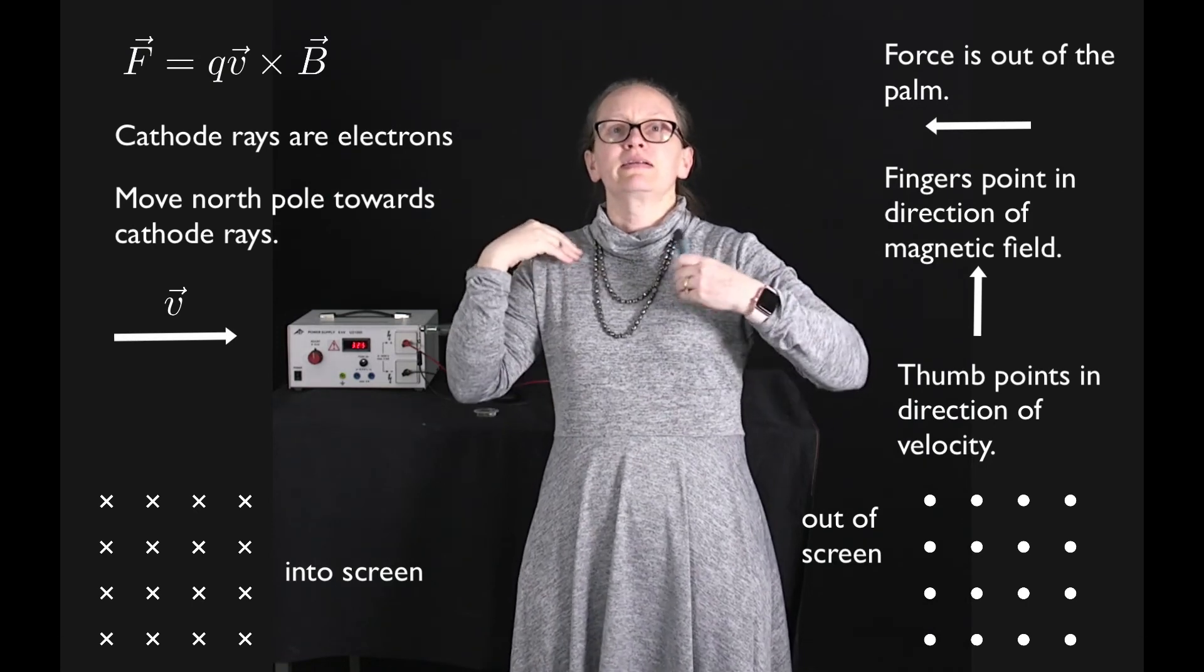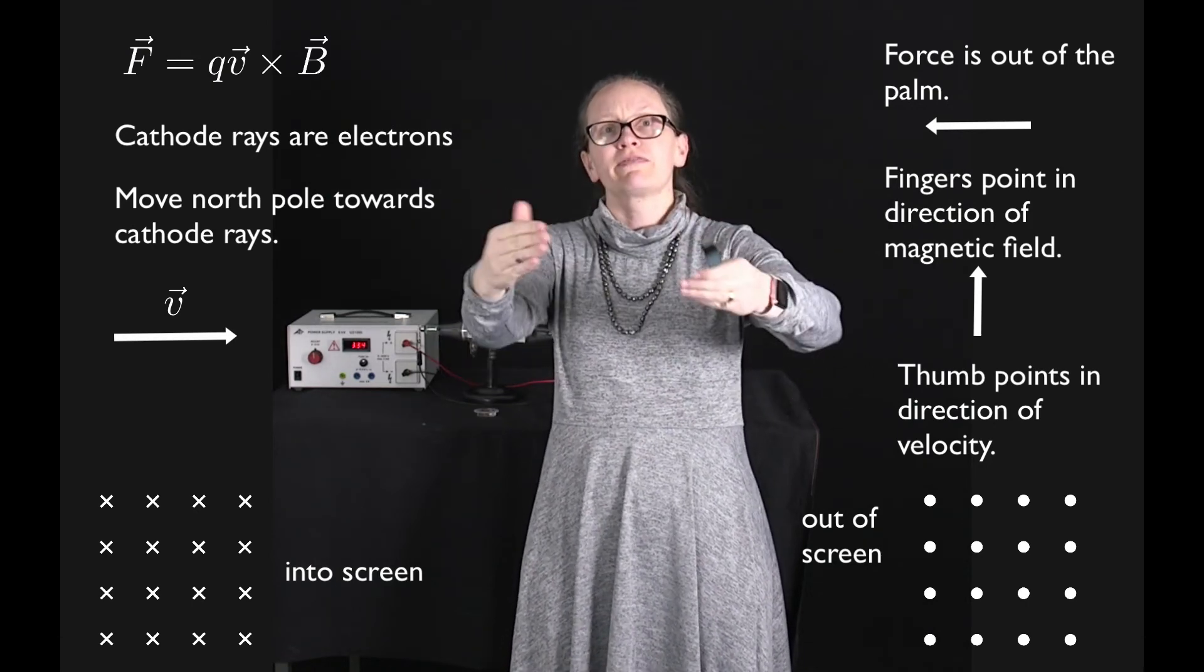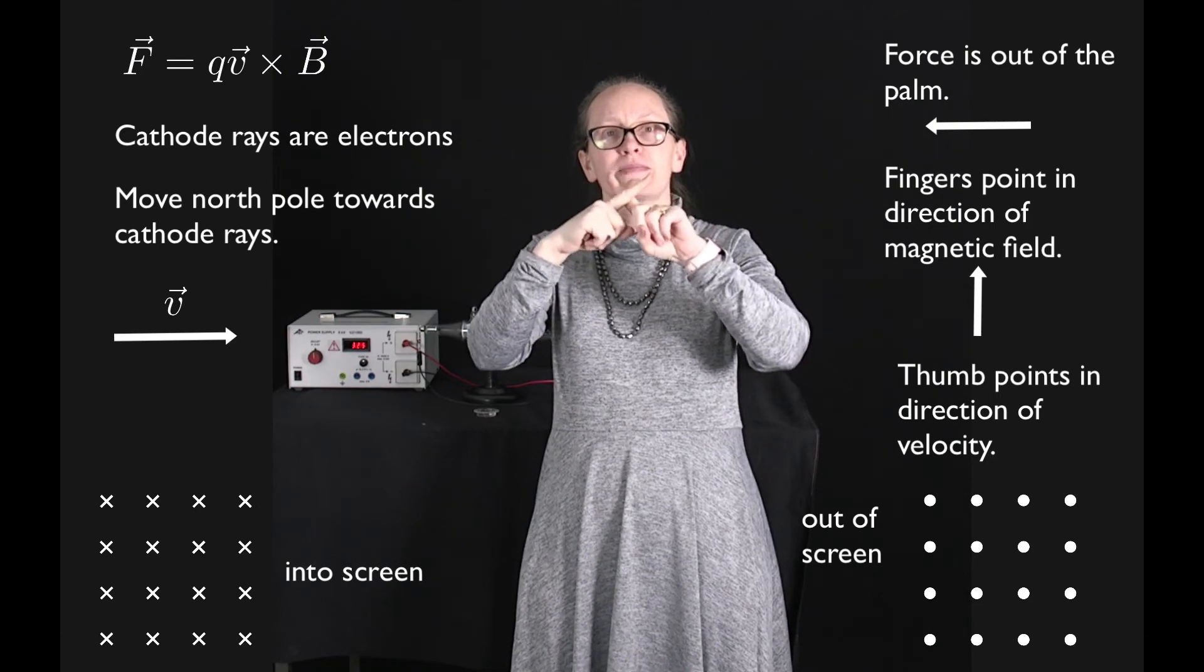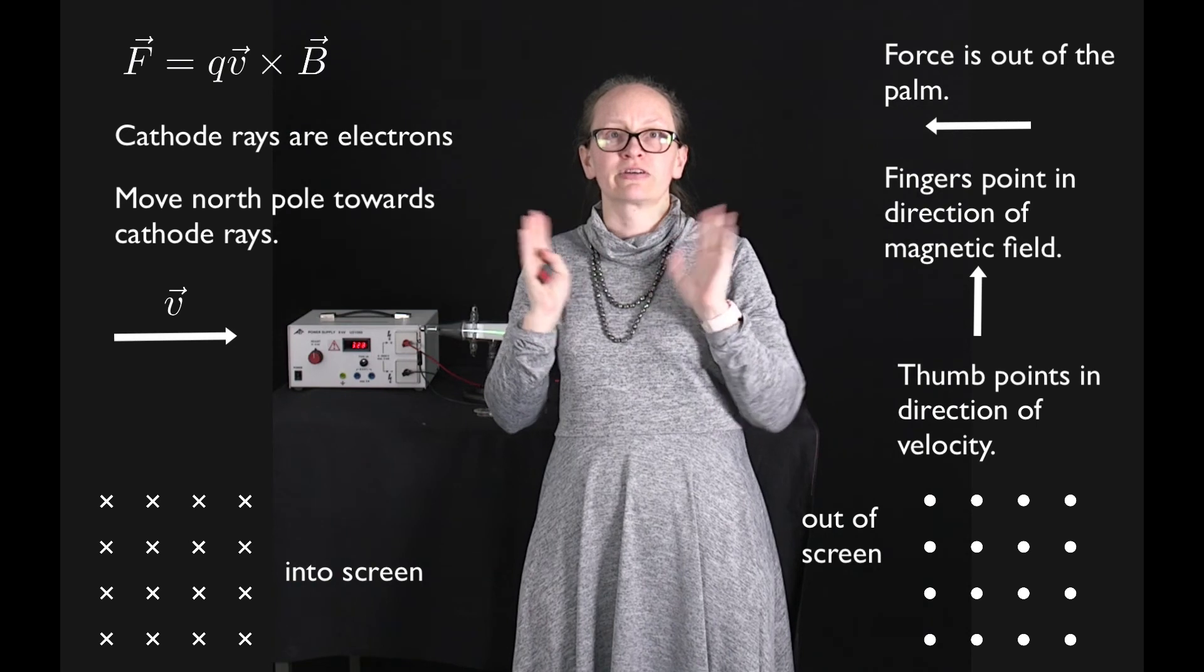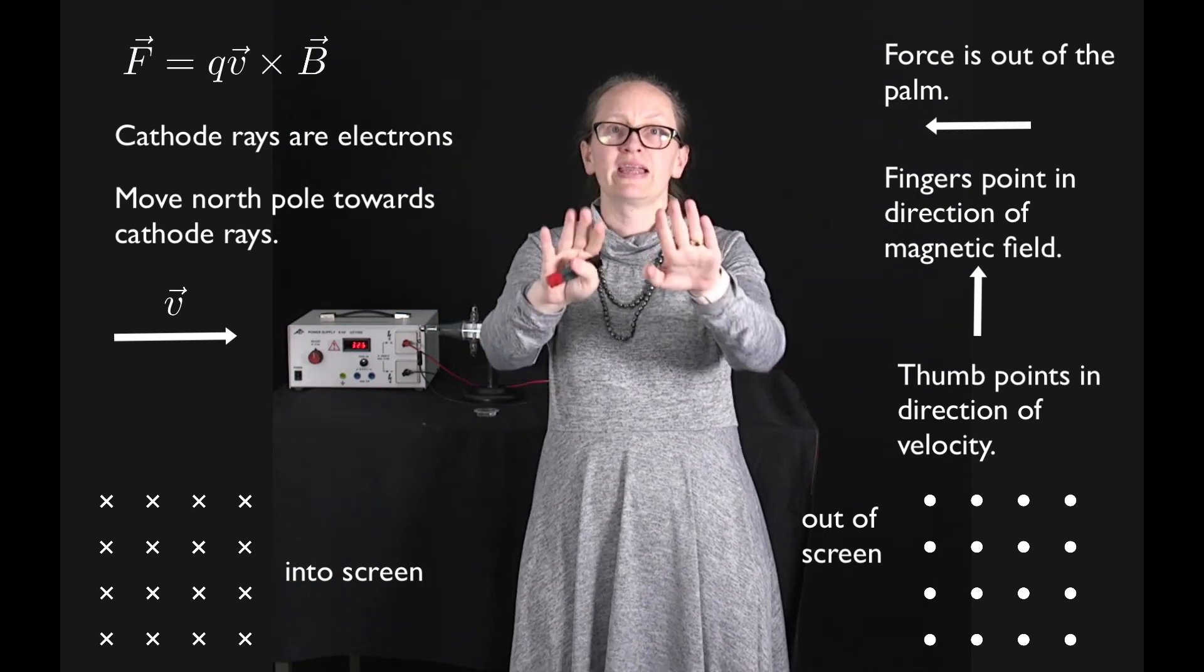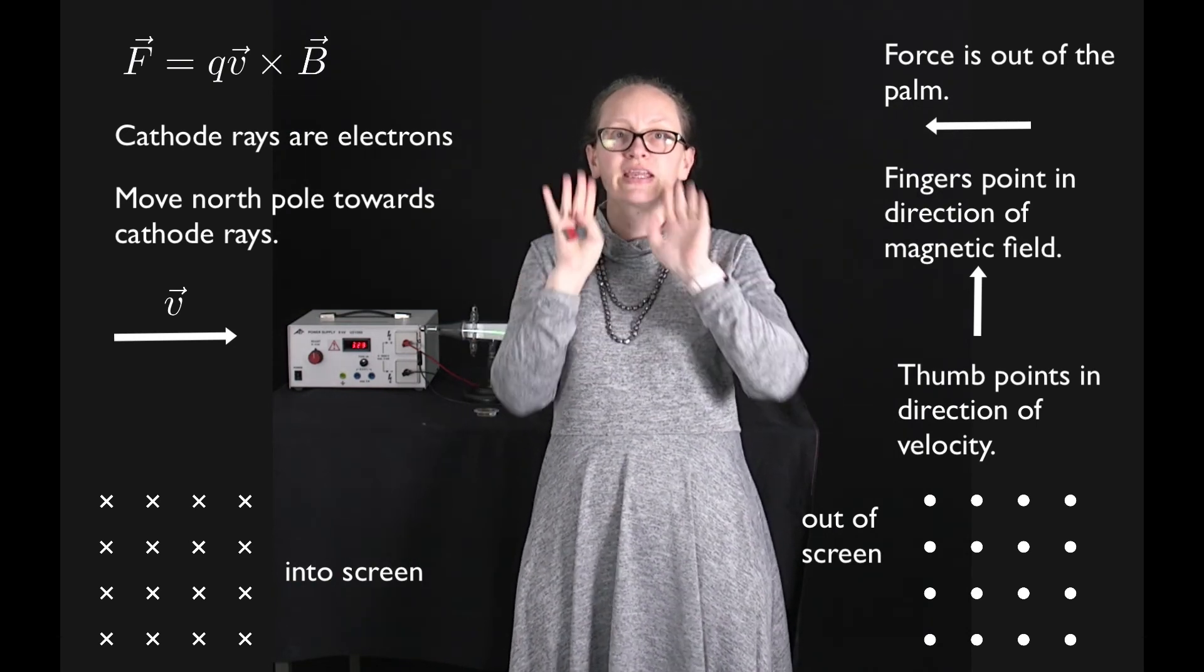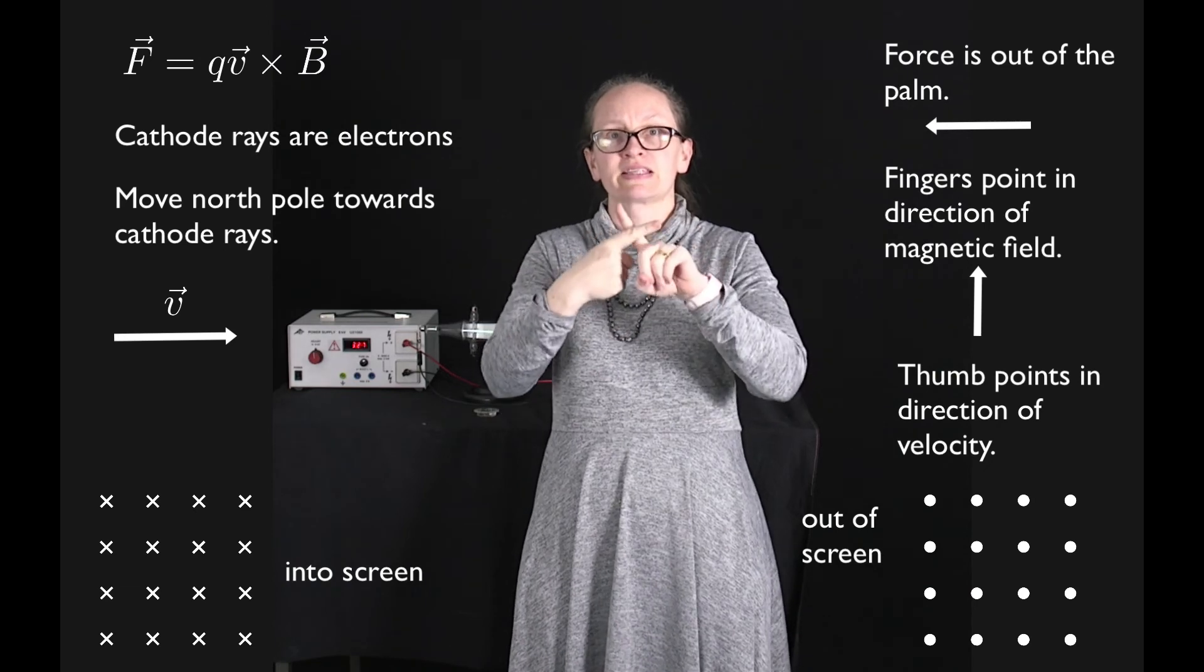When we shoot an arrow and it's moving away from us, we see the fletched feathers on the back which form a kind of cross. So magnetic field lines or electric field lines which are moving away from us or into the screen are represented by crosses.